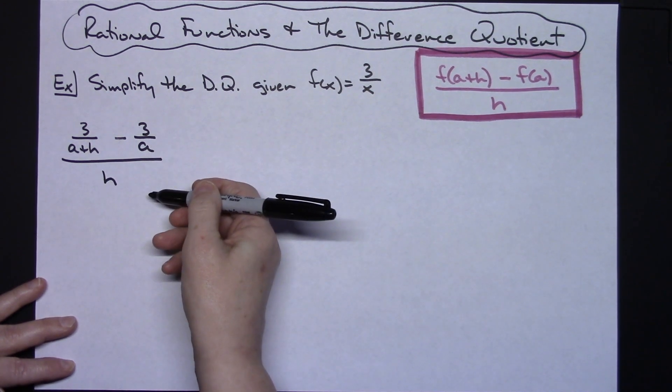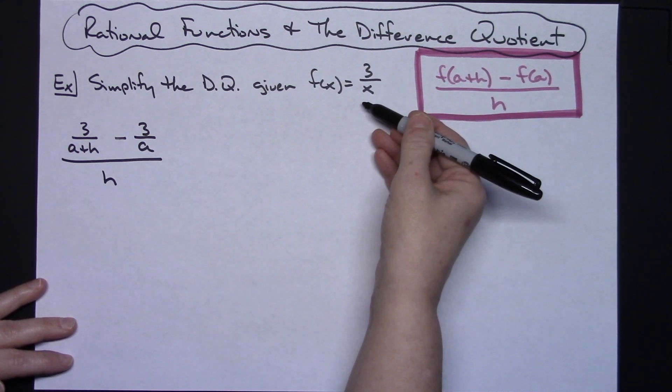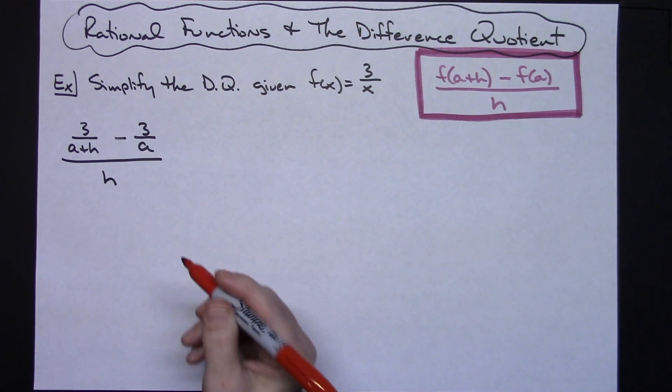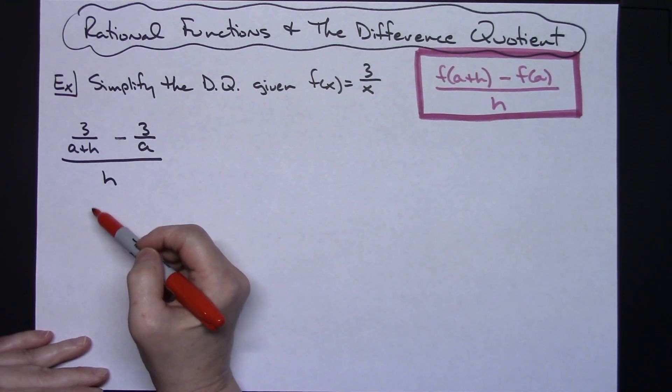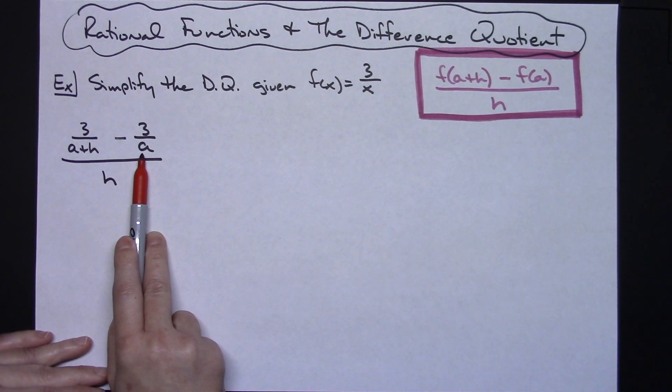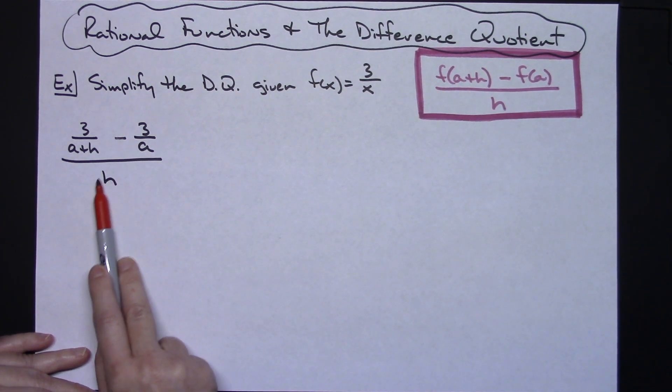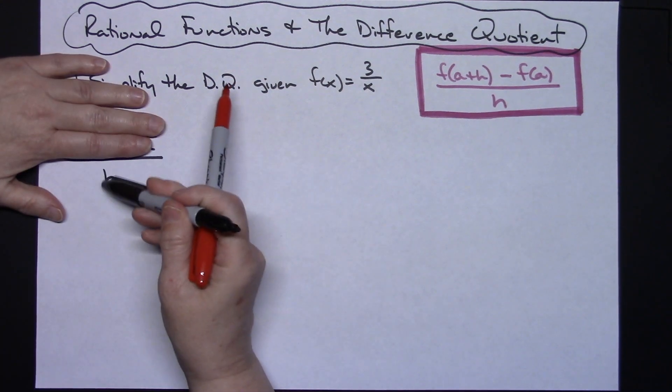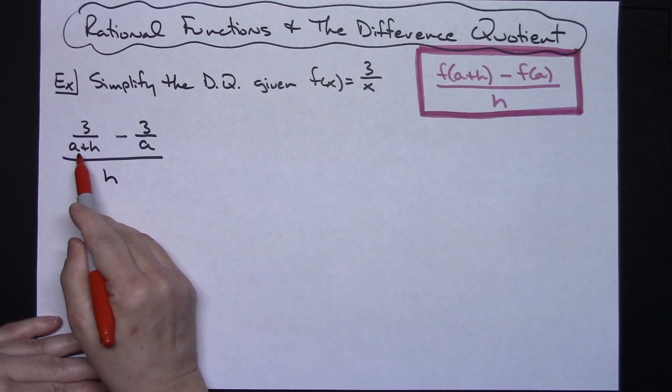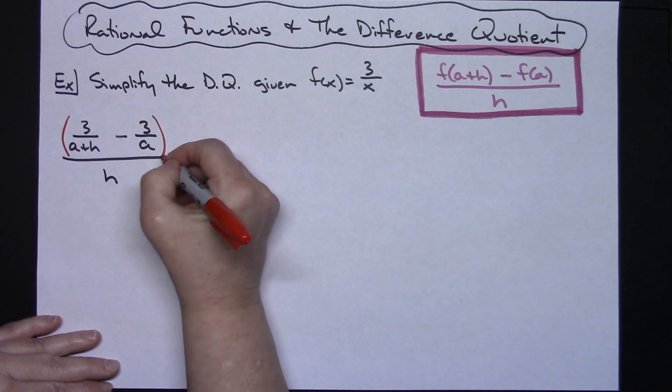Right here is that complex rational expression that I was talking about. Now to simplify this, the easiest way would be to multiply through by the least common denominators. I'm going to look at the denominator here which is a, the denominator here which is a plus h, and the denominator of just the h. My least common denominator is going to be a times a plus h.